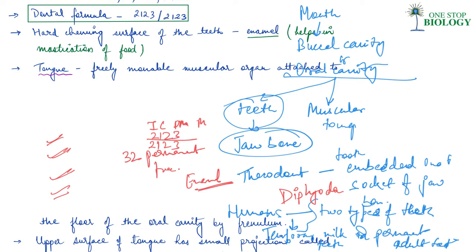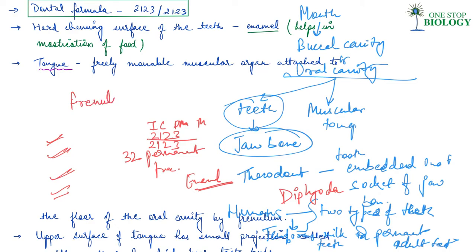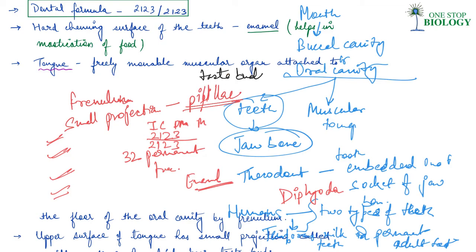The tongue is a muscular organ attached to the floor of the oral cavity but is freely movable. It is attached by a small piece known as the frenulum from the floor of the oral cavity. The upper surface of the tongue is completely free and has small projections known as papillae, and these papillae have taste buds. The different kinds of taste we get from food are because of these taste buds.